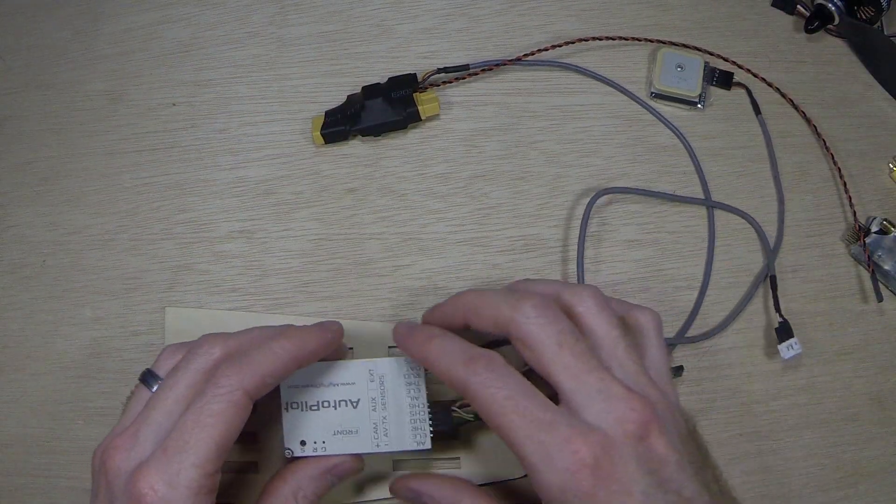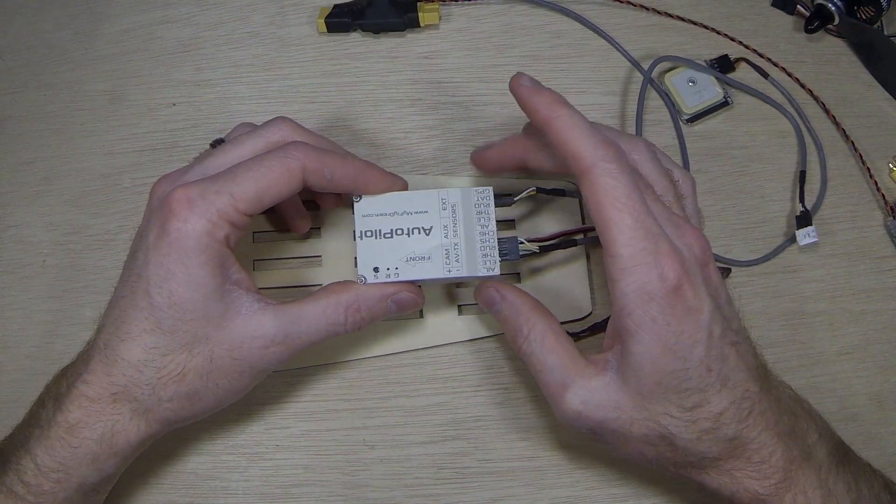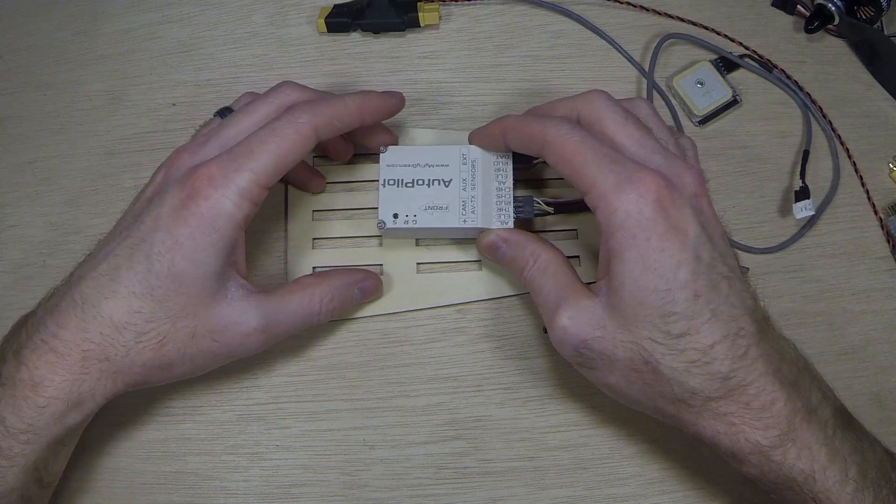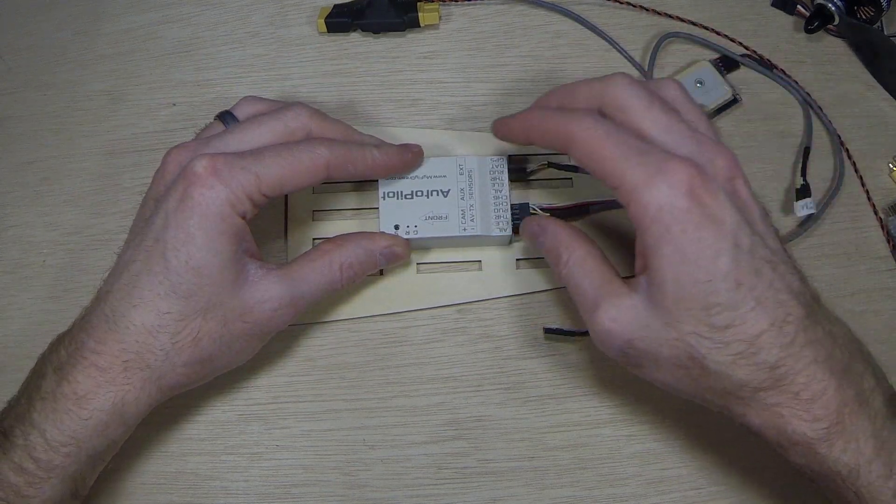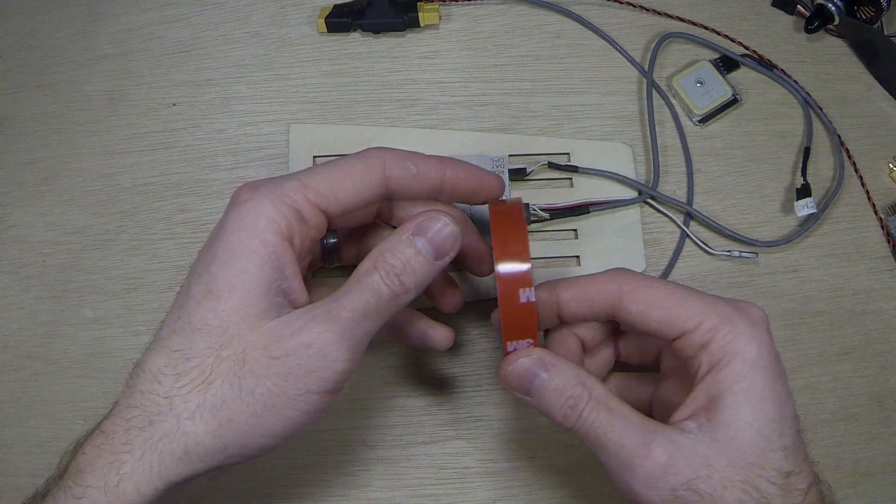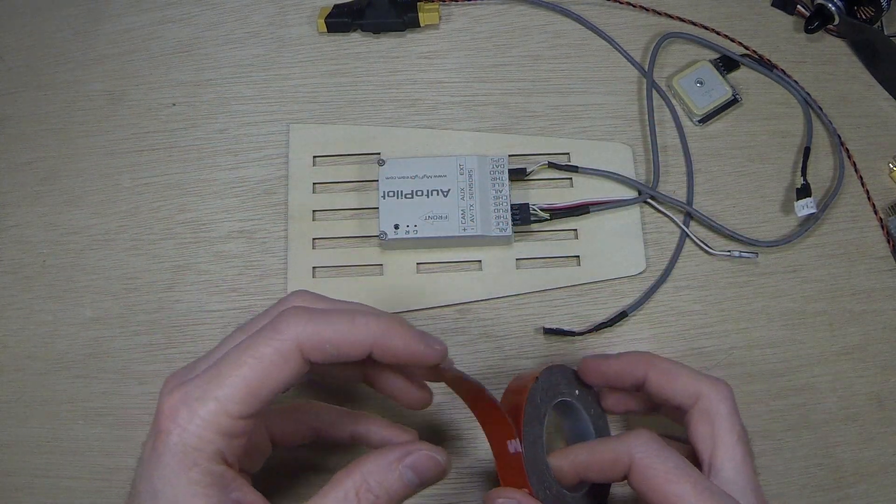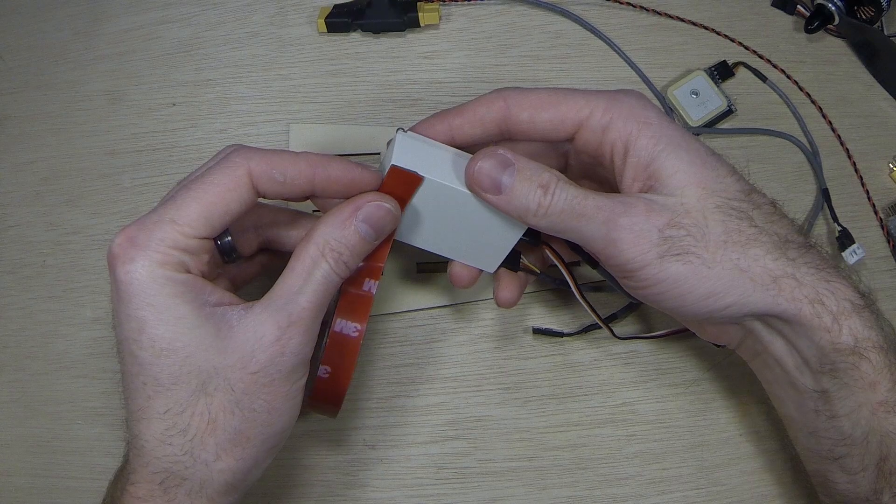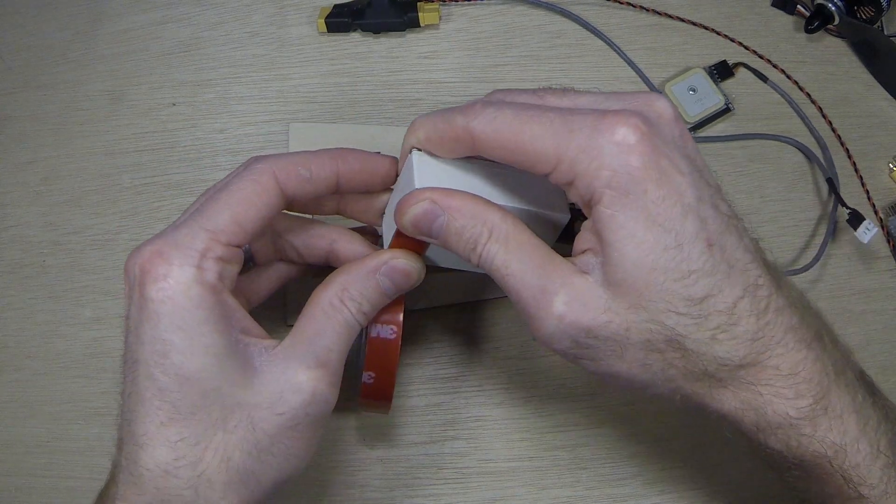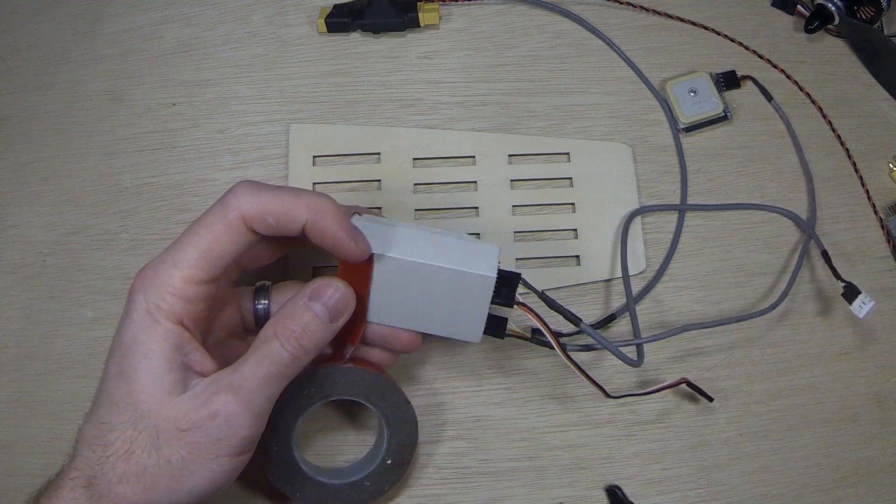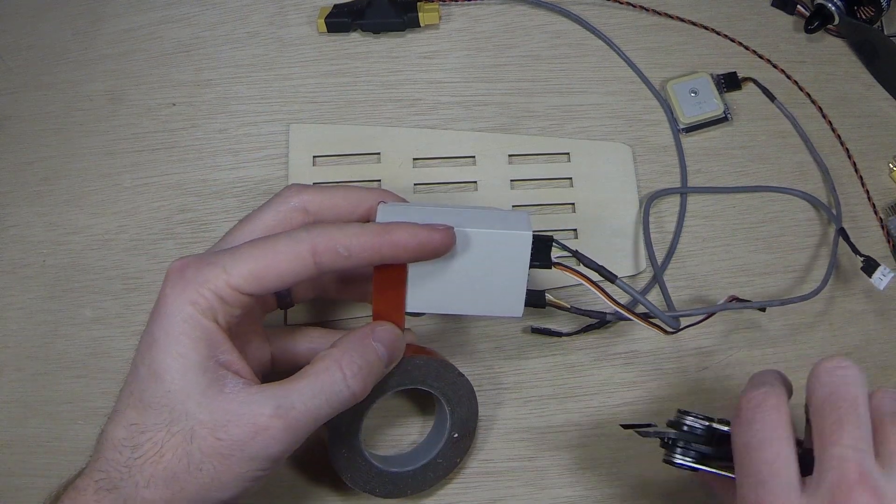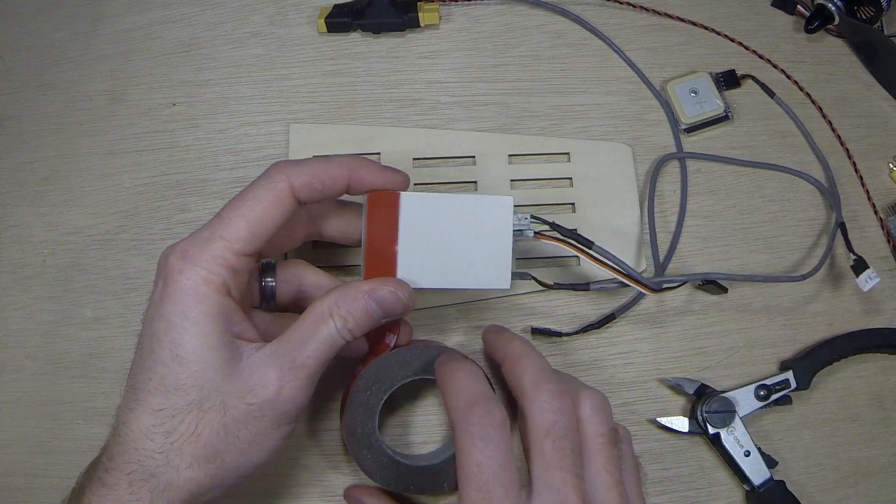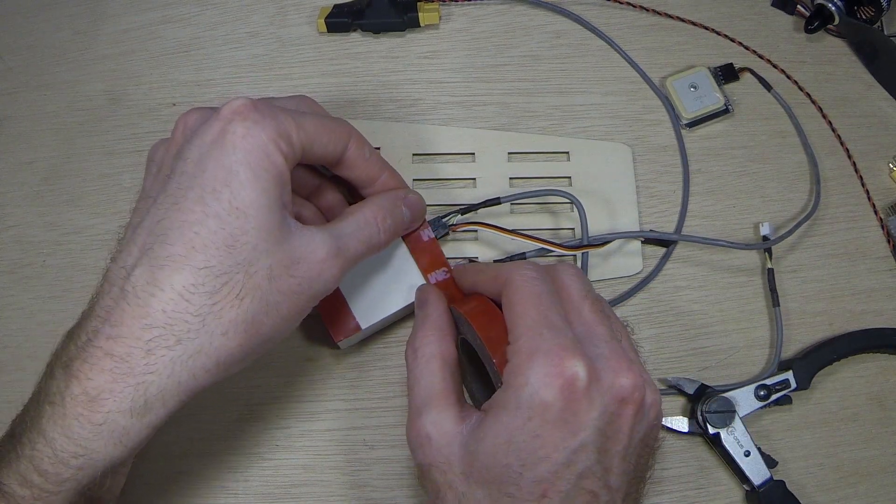What we'll want to do is we'll want to start off with positioning our autopilot. Now the front of my aircraft is out this direction, so I'm going to be mounting this right here, and what I'm going to use for it is 3M adhesive tape. This stuff is extremely strong, and works really well for pretty much anything that you need to mount in an aircraft.